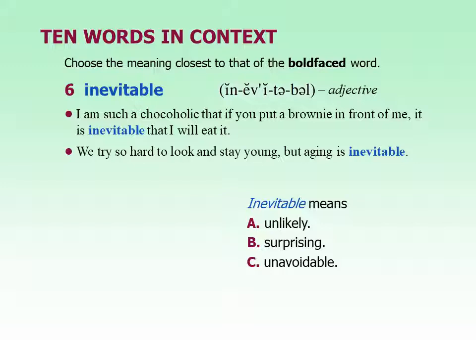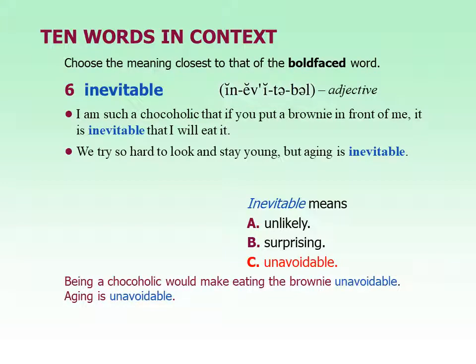The next one is inevitable. It's also an adjective. I'm such a chocoholic that if you put a brownie in front of me, it's inevitable that I will eat it. We try so hard to look and stay young, but aging is inevitable. This word means unavoidable — something you cannot avoid; it will happen no matter how hard you try. Death, unfortunately, is inevitable. Paying taxes is inevitable. Aging is inevitable.